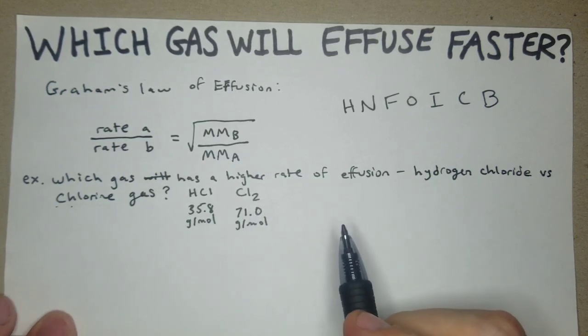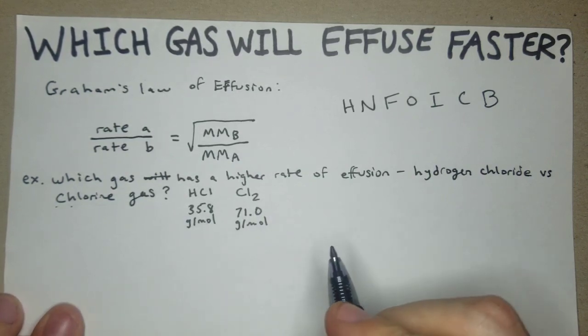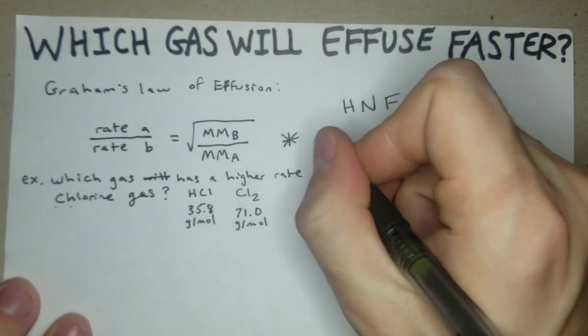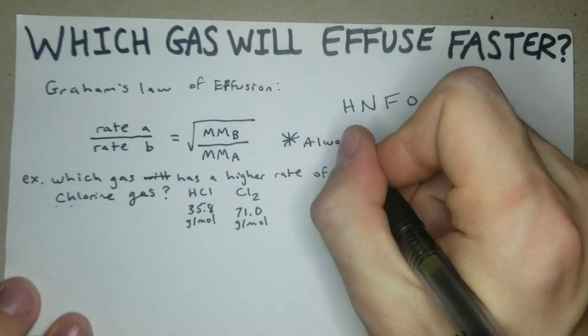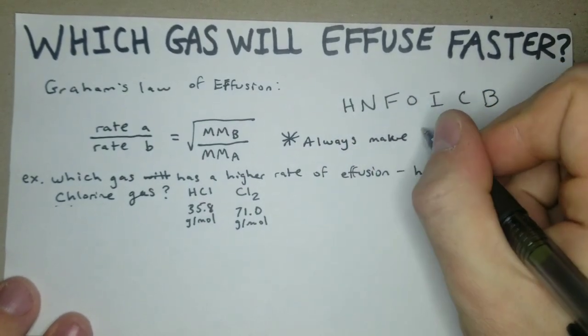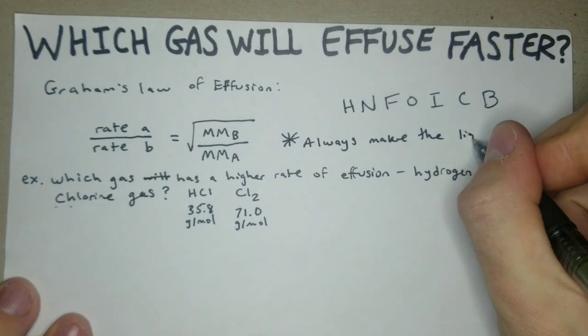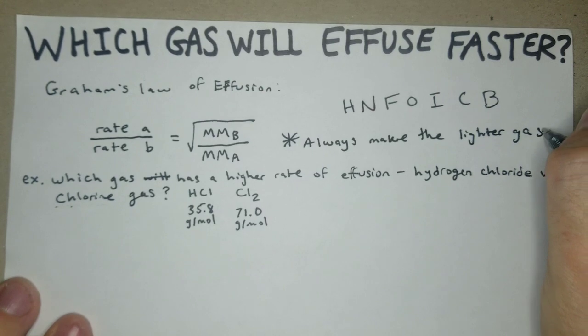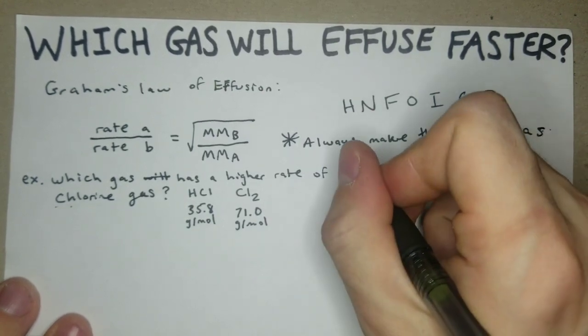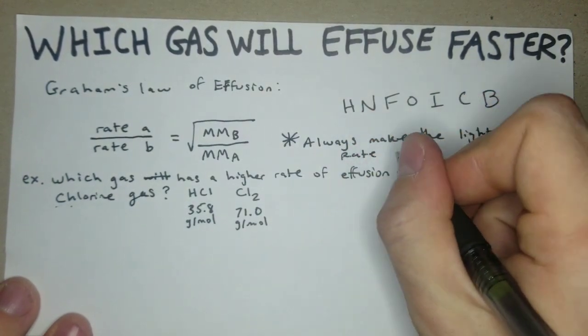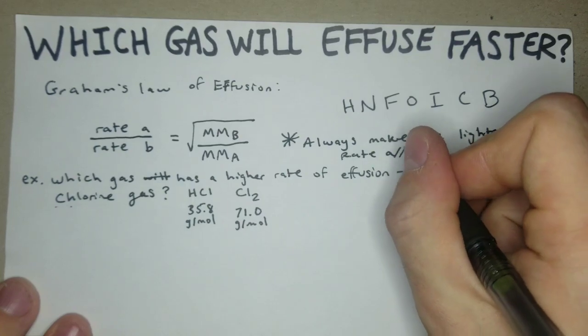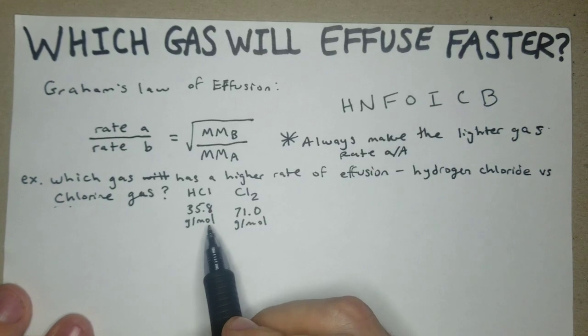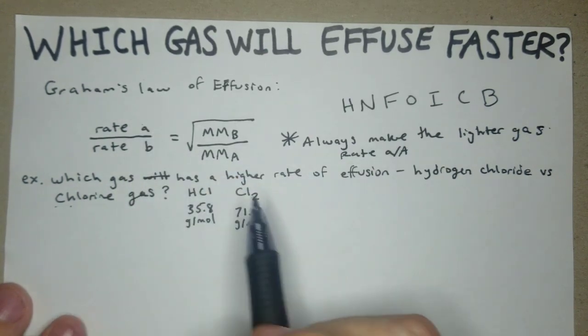The next step, and this is probably the most important thing to keep in mind with these problems: always make the lighter gas rate a. So HCl is the lighter of the two gases, we're going to make that rate a. So rate a over b.